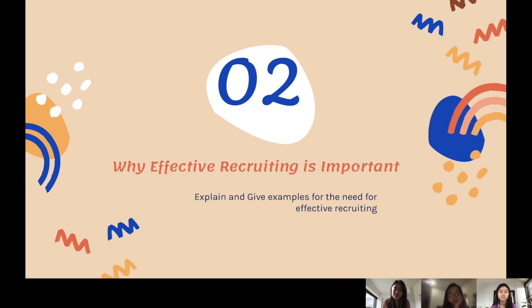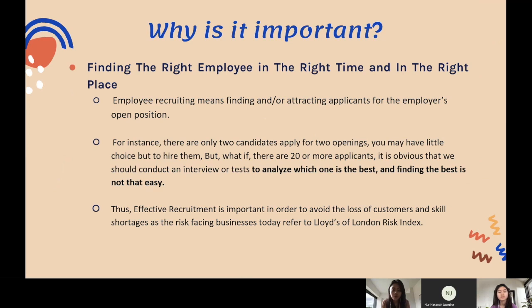The next learning objective is why effective recruiting is important — finding the right employee at the right time and in the right place. Employer recruiting means finding and attracting applicants for the employer's open positions. For instance, if there are only two candidates for two openings, you may have little choice but to hire them. But with 20 or more applicants, we should conduct interviews or tests to find the best. Effective recruitment is important to avoid the loss of customers and skill shortages, which are among the top risks facing businesses today.